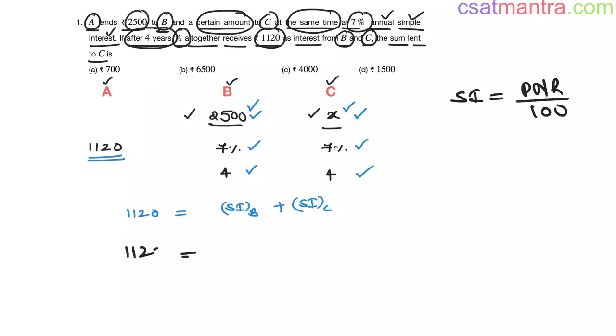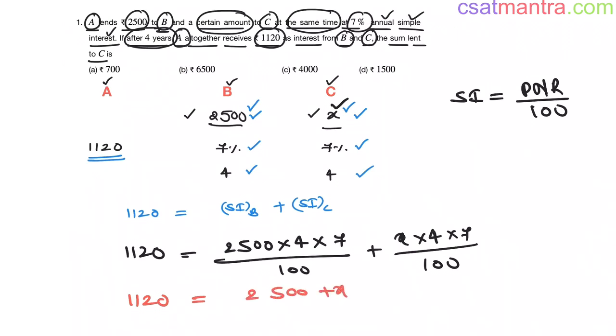So, 1120 is equal to simple interest on the amount given to B. That is, P is 2500, N is 4 years, R is rate of interest 7 by 100 plus X. The principal amount given to C is X, N is 4, R is 7 by 100. Now, 1120 is equal to 2500 plus X into 4 into 7 by 100.